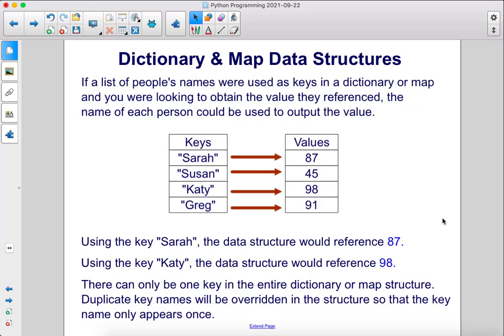If a list of people's names were used as keys in a dictionary or map, and you were looking to obtain the value they referenced, the name of each person could be used to output the value. Using the key Sarah, the data structure would reference 87. Using the key Katie, the data structure would reference 98. There can only be one key in the entire dictionary or map structure. Duplicate key names will be overridden in the structure so that the key name only appears once.